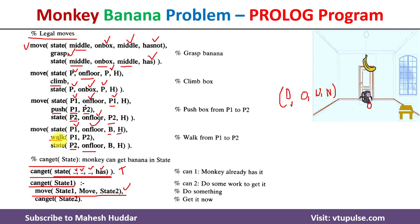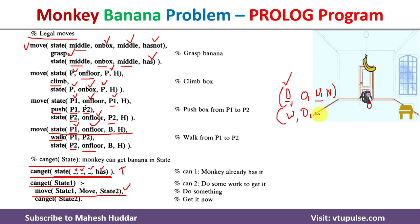We check which of the four possible moves will match the initial state. The first move, grasp, will not match because the monkey must be at the middle. The second move, climb, will not match because both the monkey and box must be at the same position, but here the monkey is at door and the box is at window. The third move, push, also requires both to be at the same position. The fourth move, walk, is valid — the monkey is at P1 (door) and we do not care about the box. So walk is executed and the monkey goes from door to window, still on the floor. The new state is: monkey at window, on floor, box at window, no banana.